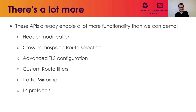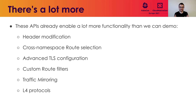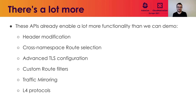That was a really cool demo. I love when we can see the Kubernetes community working so well together across SIGs — SIG Multicluster and SIG Network APIs working really well together. These APIs enable a lot more functionality than we can demo: header modification, cross-namespace route selection, advanced TLS configuration, custom route filters, traffic mirroring, L4 protocols — there's just so much more that we can do here. And this is just the start — we're in V1 Alpha 1 and still working on adding new functionality and new features to this API.